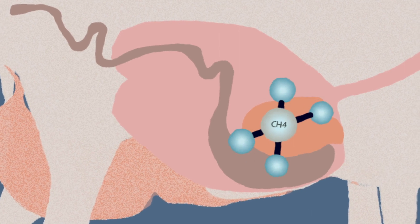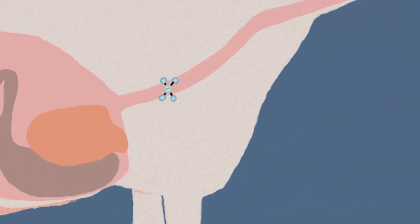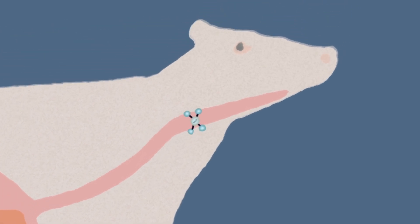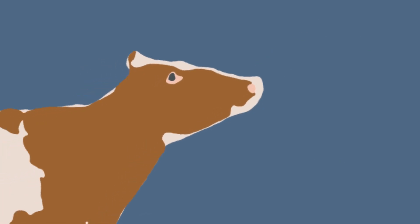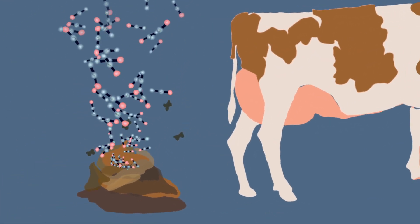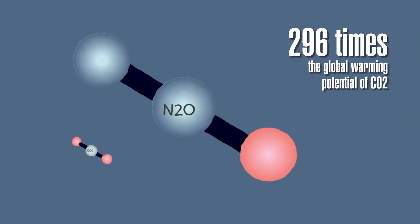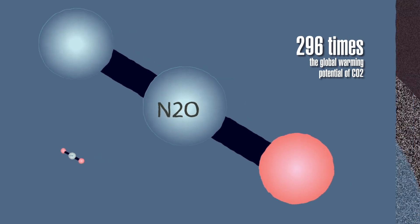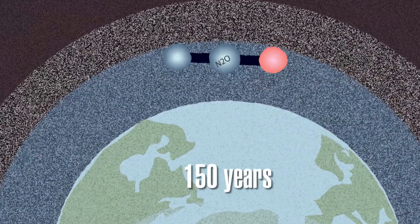Methane is produced by an animal's digestive process in which microbes decompose and ferment in the digestive tract. This gas is then emitted when animals belch. Beyond that, animals used for meat are responsible for 65% of all human-related emissions of nitrous oxide, a greenhouse gas with 296 times the global warming potential of carbon dioxide. Nitrous oxide can also stay in the atmosphere for 150 years.